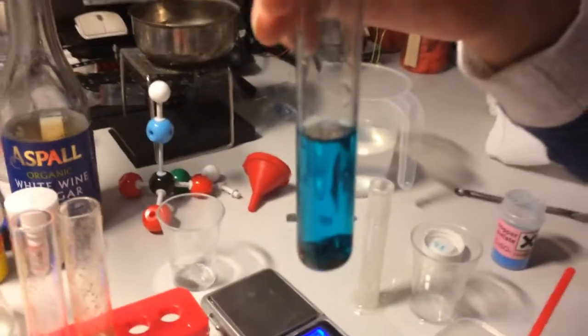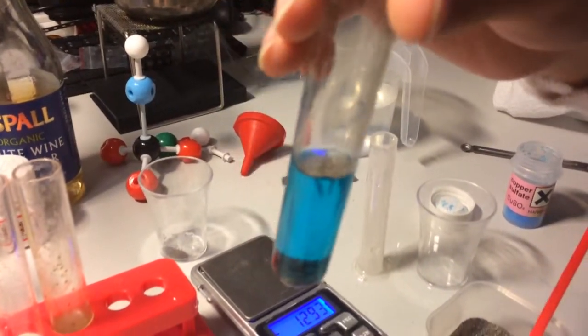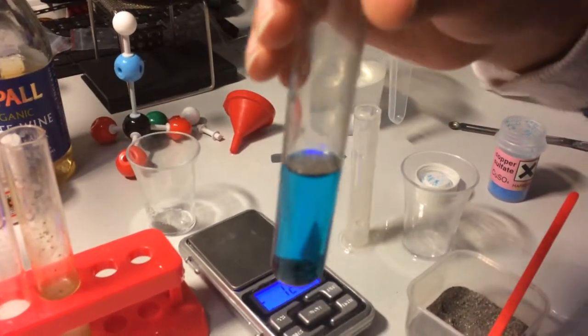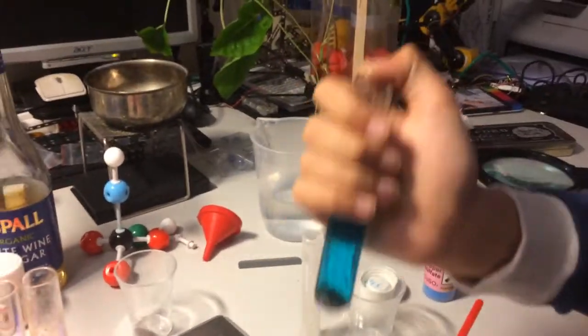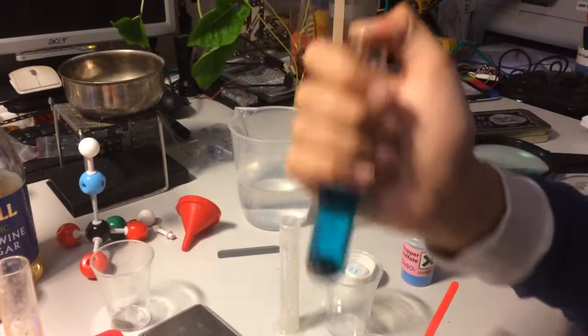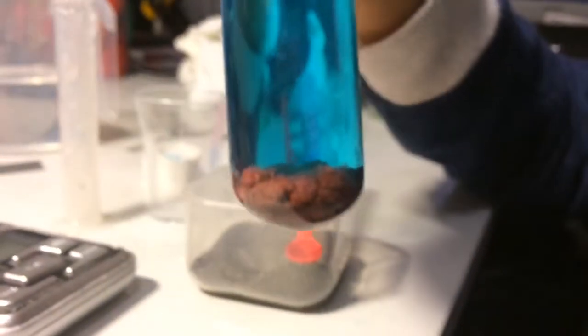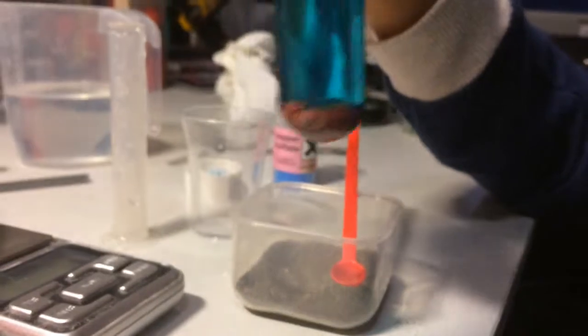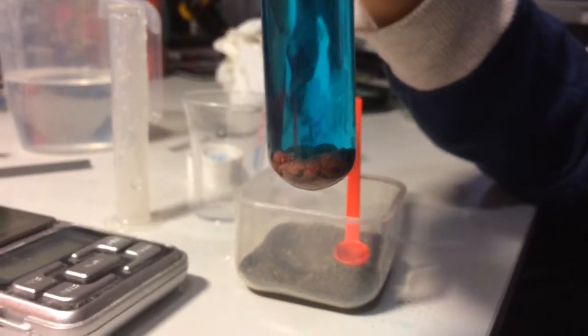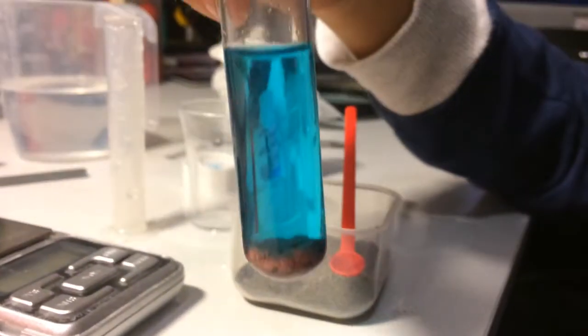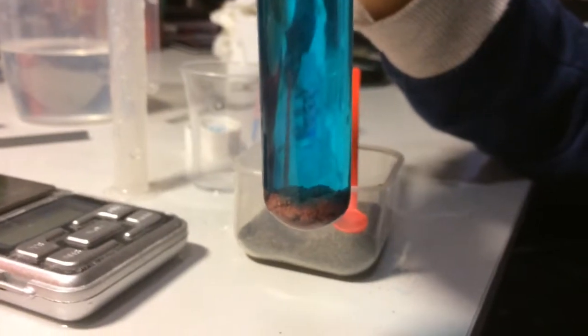As you can see, it's already sunk to the bottom with only a bit of it floating at the top. Now, after a little mixing, the iron filings have turned reddish brown. In fact, they are not even iron anymore. Now it's copper. Let's do a bit more mixing and see what happens.